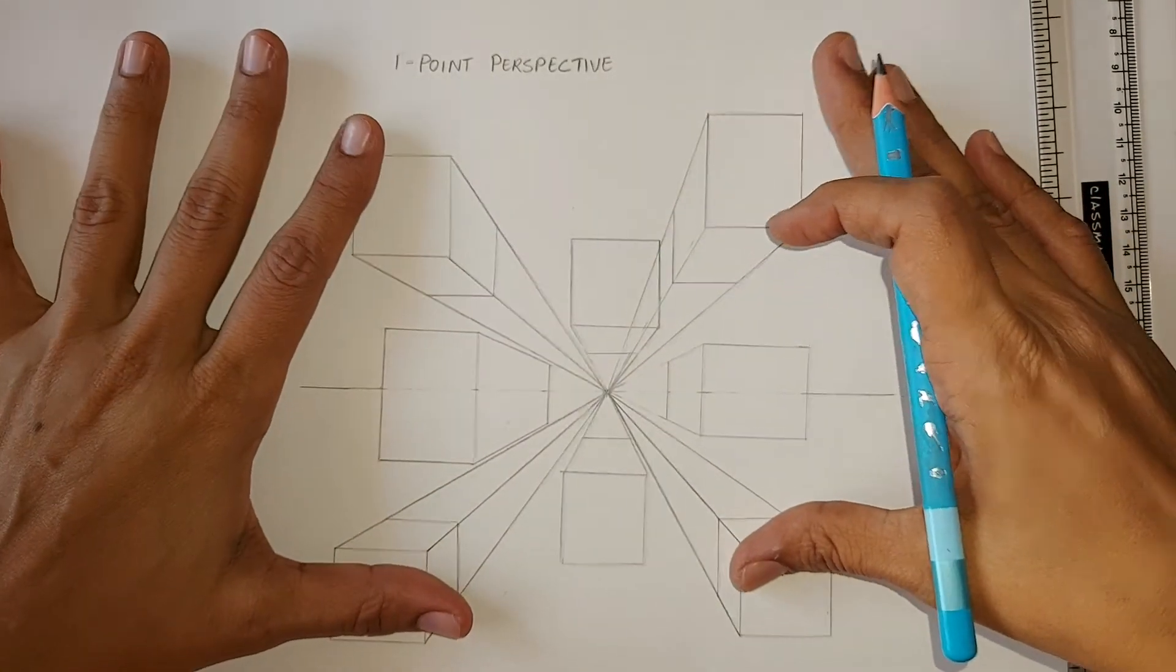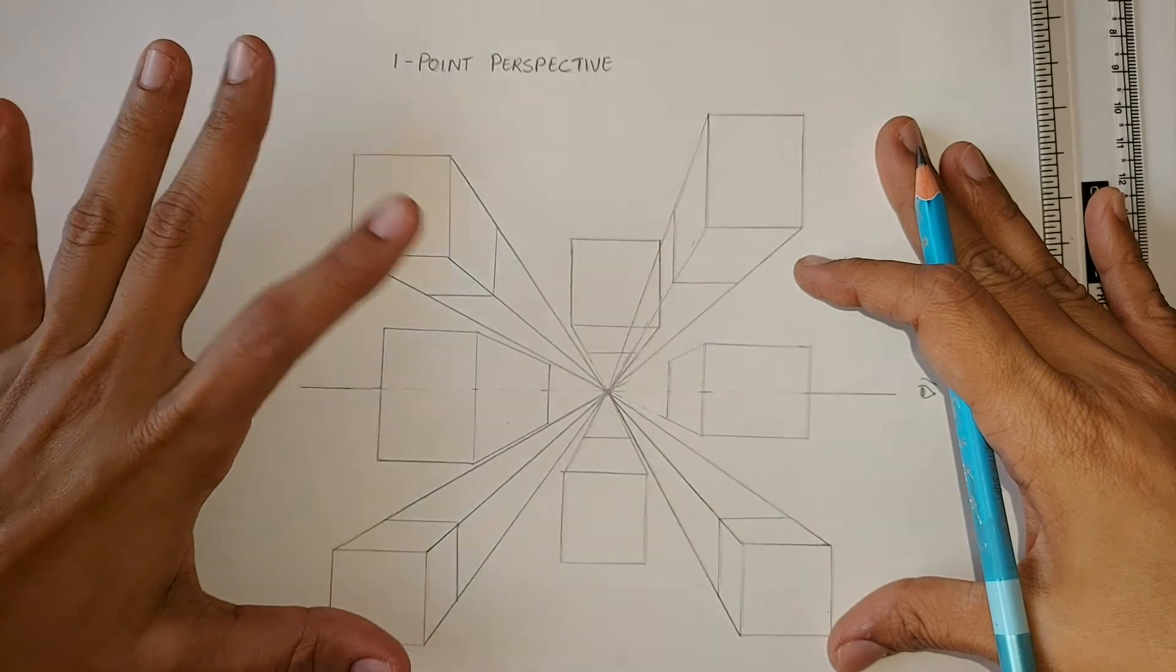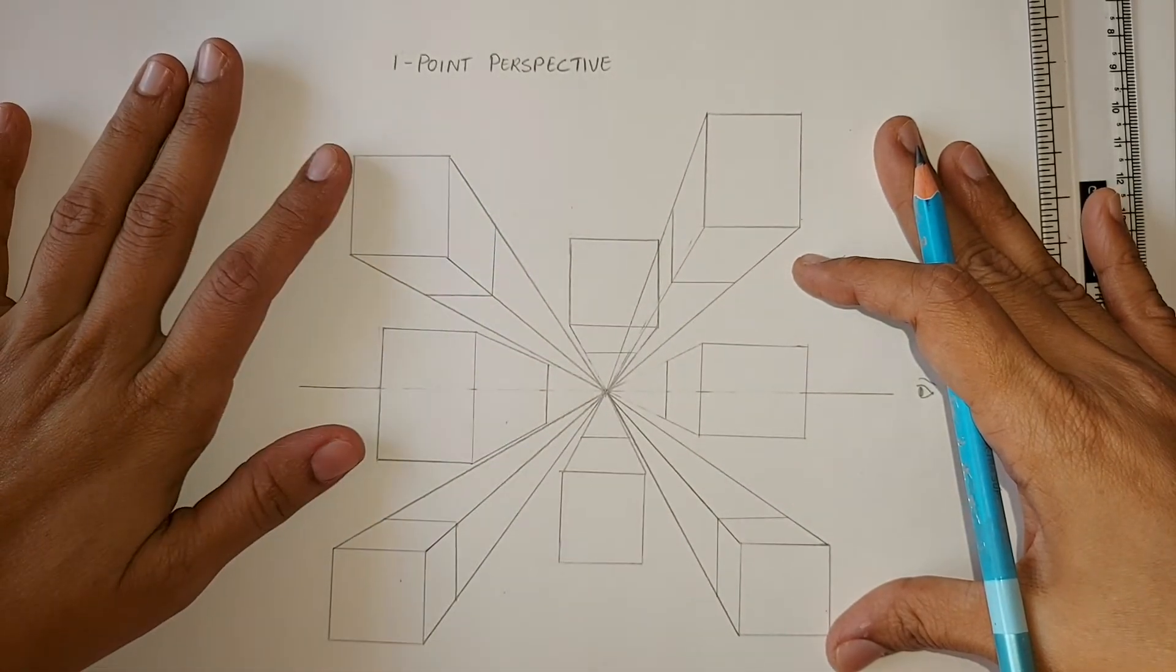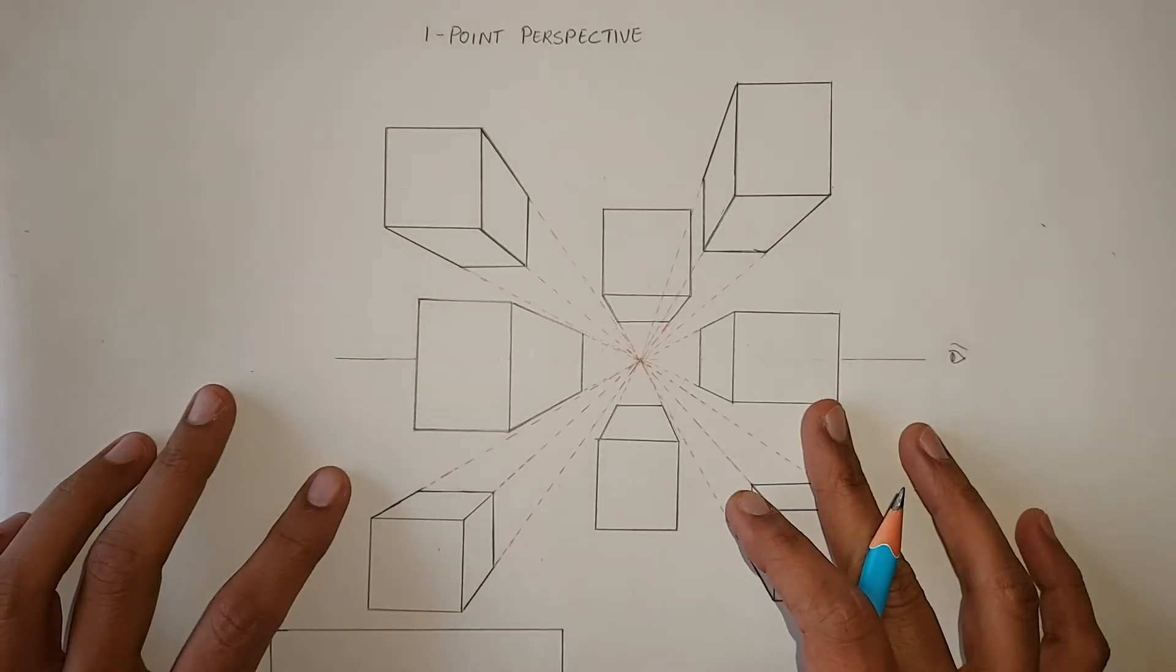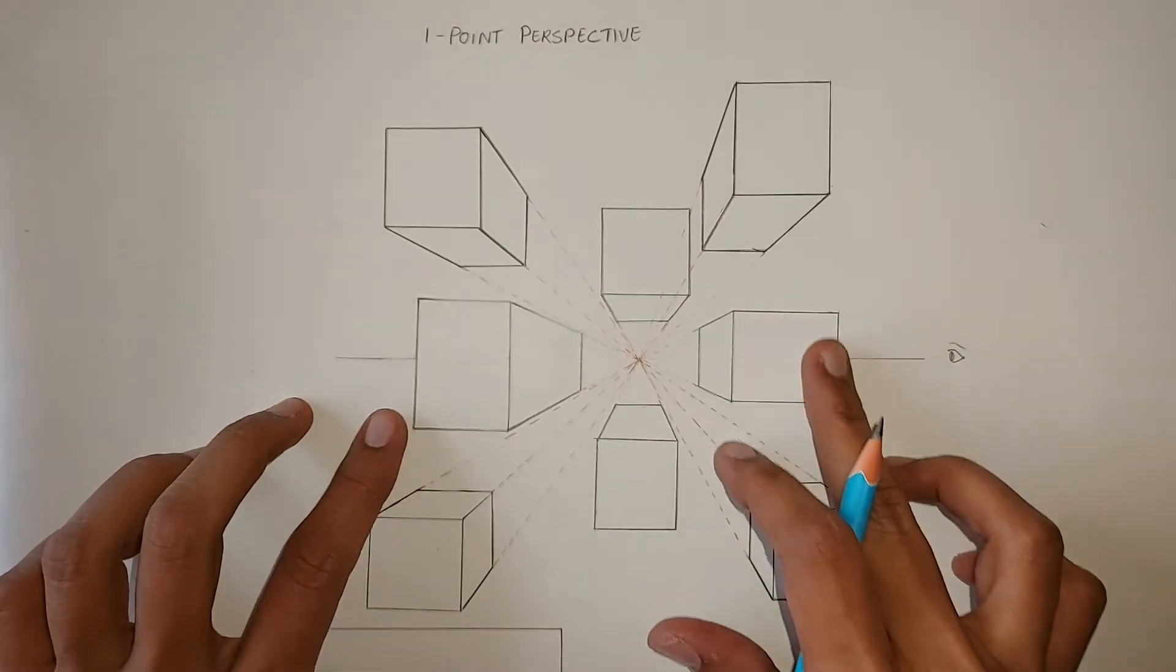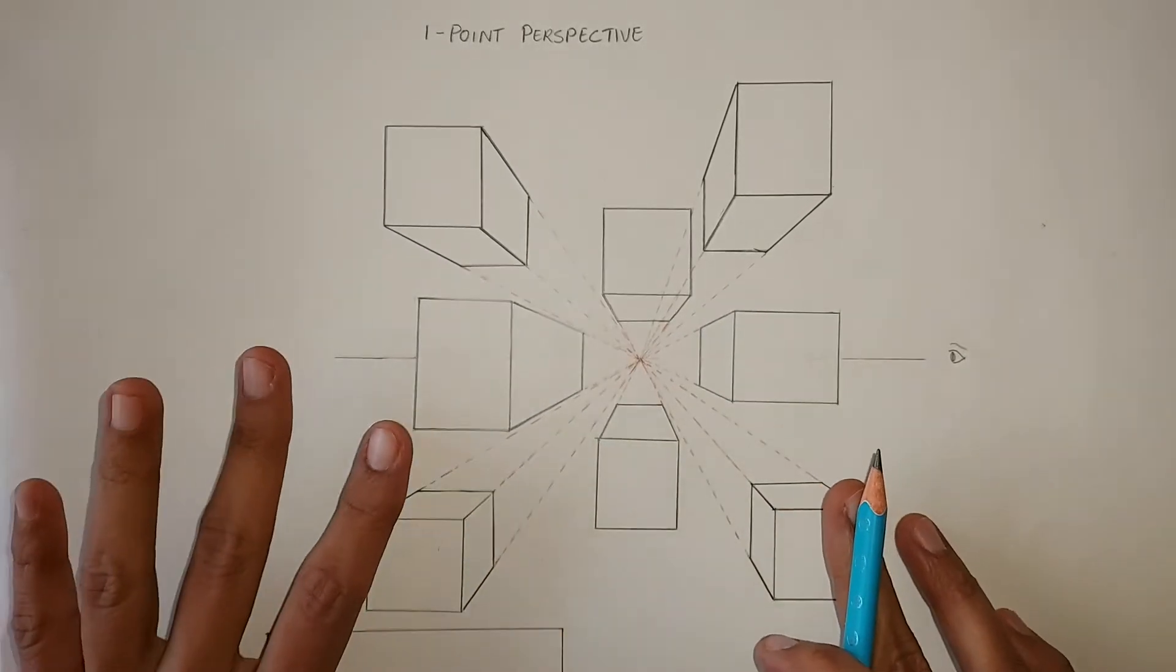I know this looks confusing right now. I'll rub all the extra lines and mark them with red color for your understanding. I think now it's more clear. I have marked the converging lines with red for you to understand.